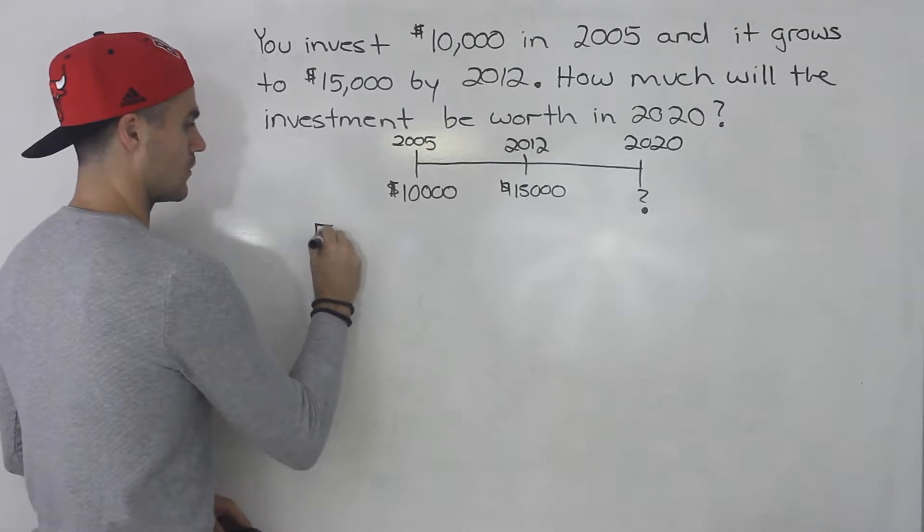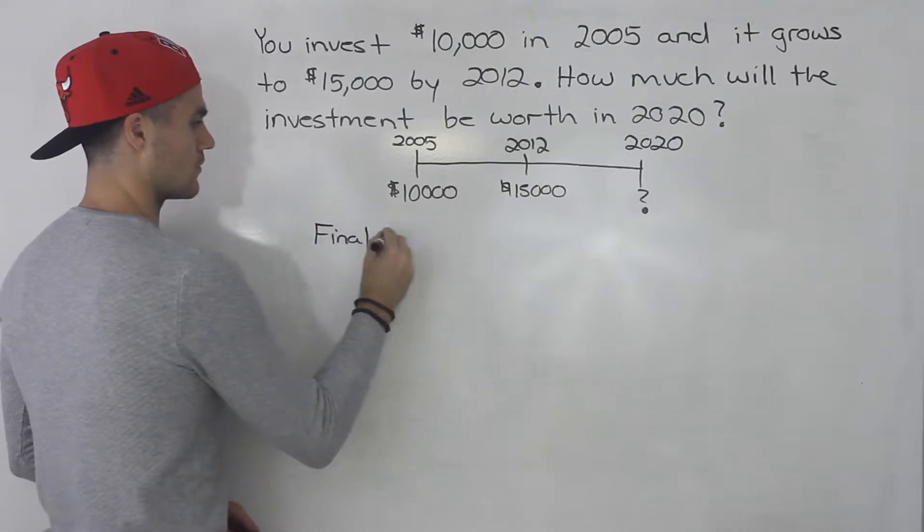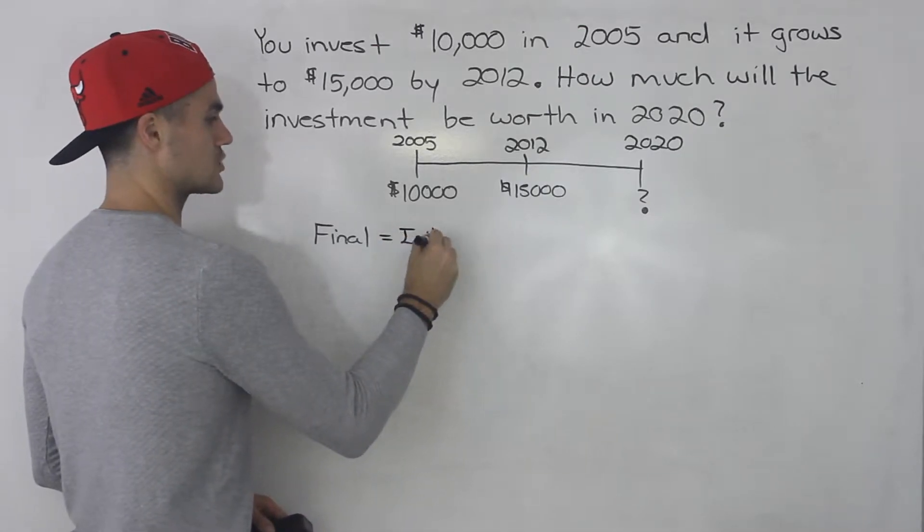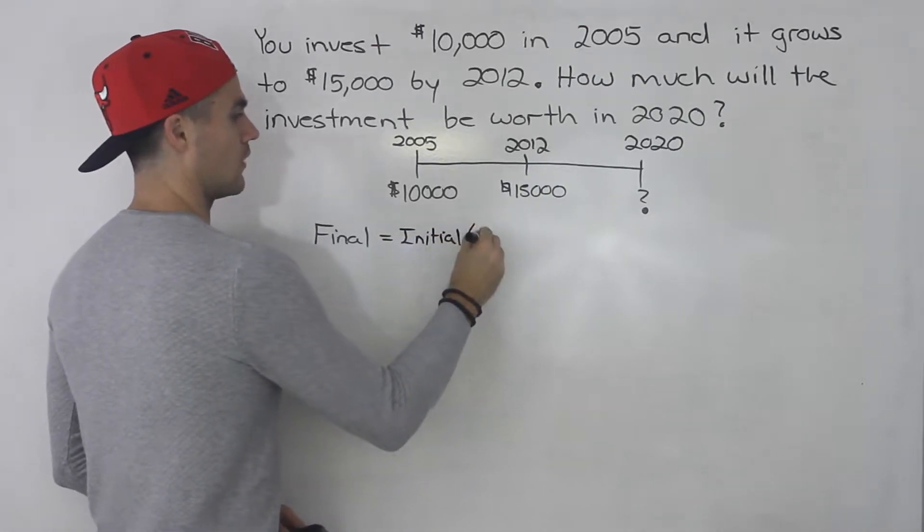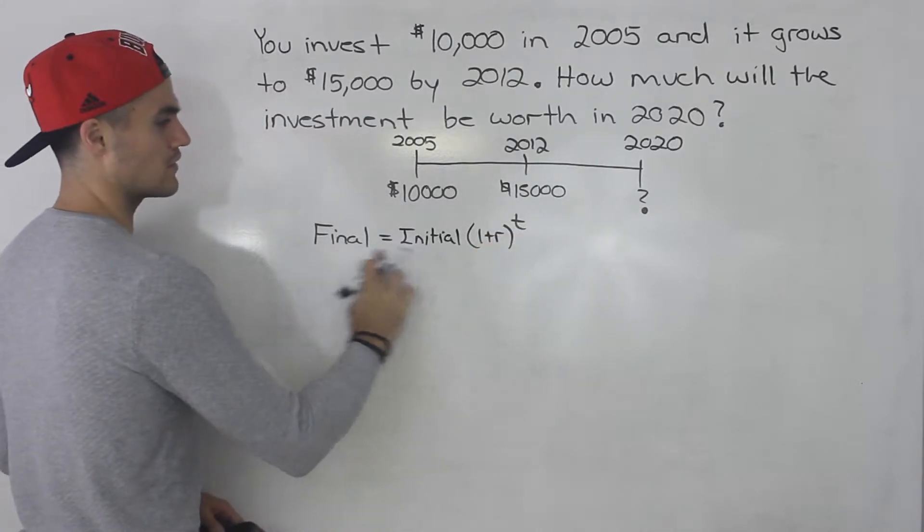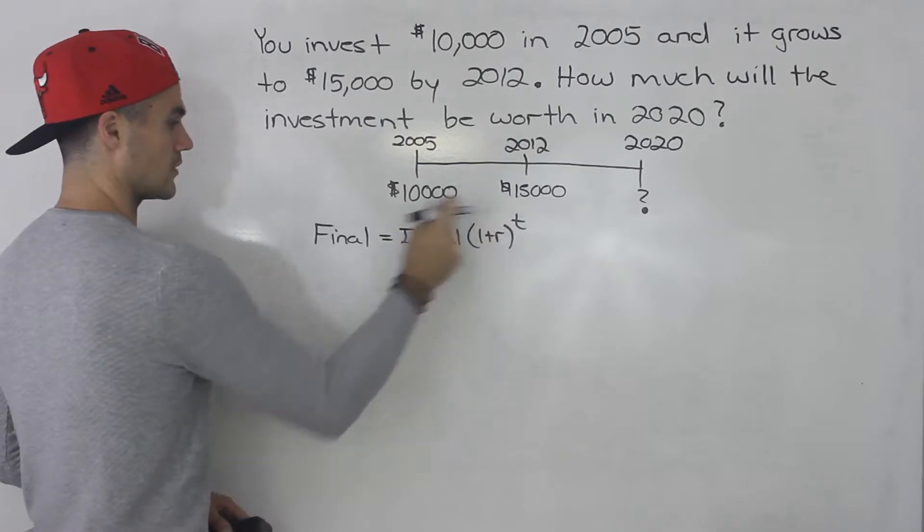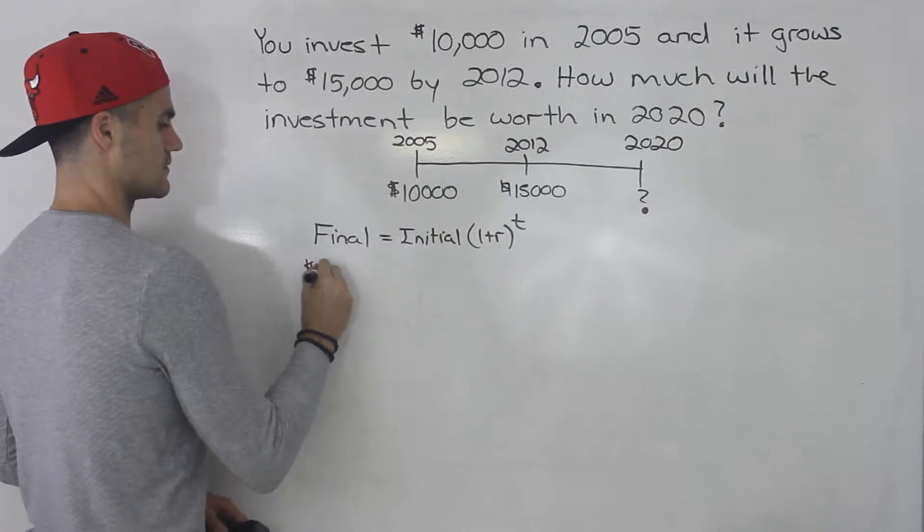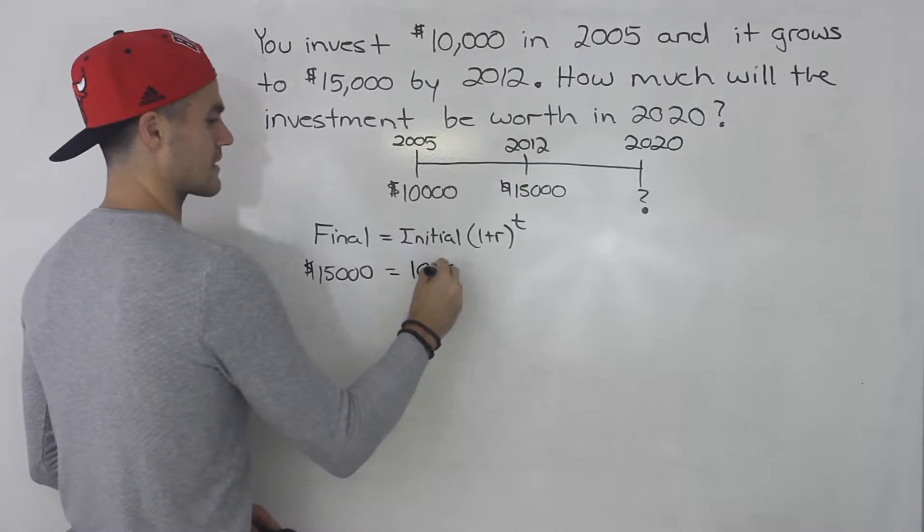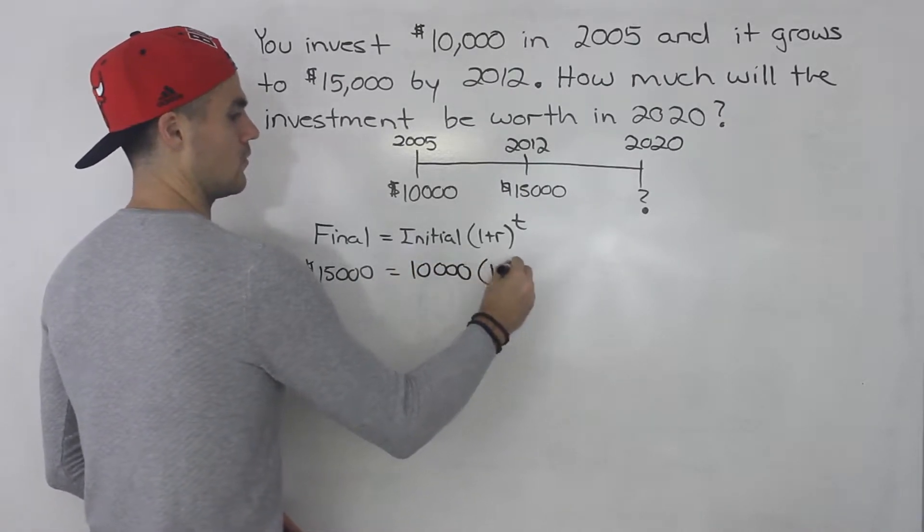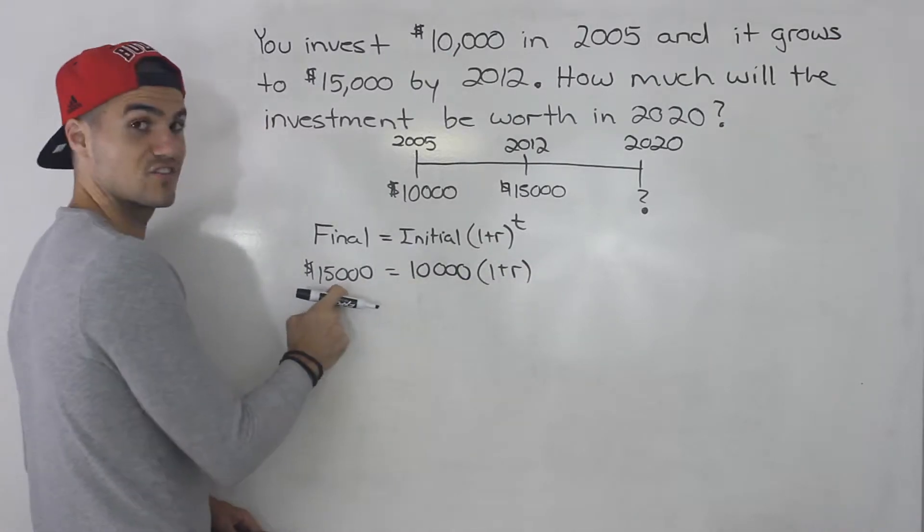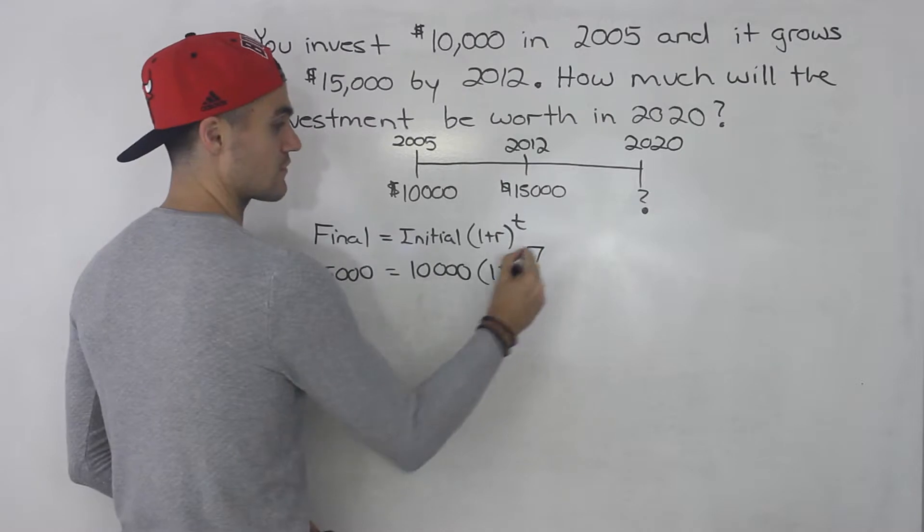We know the general exponential formula is final amount equals the initial amount times (1 plus r) to the power of t. So what can we fill in here in this formula? Well we know the final amount, it's $15,000. We know the initial amount is $10,000. We don't know what the growth rate is but we know that it's going from $10,000 to $15,000 in seven years.